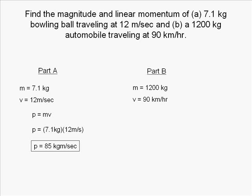It is necessary to convert from kilometers per hour into meters per second because the units for momentum are kilogram meters per second. After converting, we find that 90 kilometers per hour equals 25 meters per second. Now we must choose our formula.